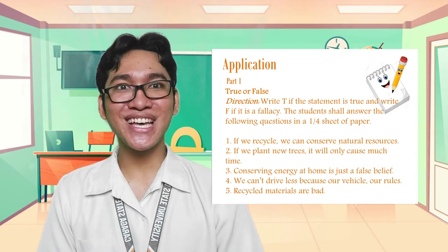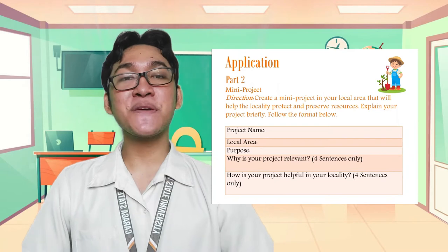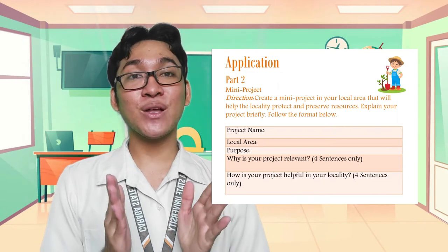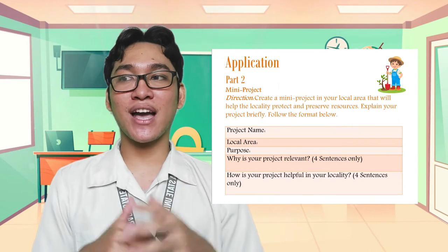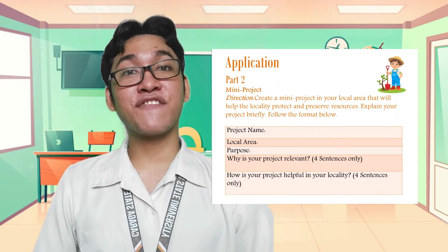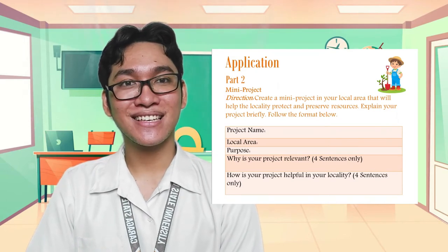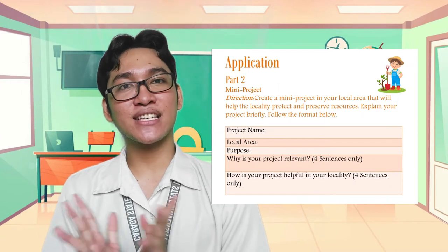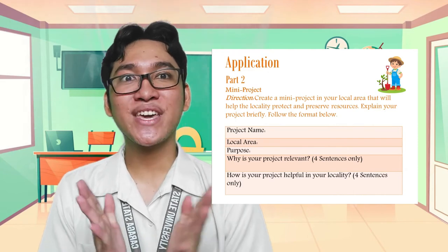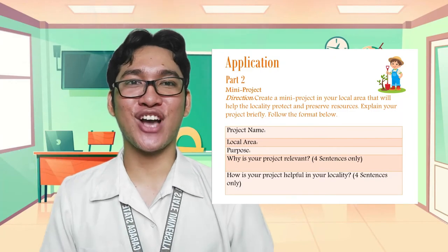All of you got a perfect score. Very good. Now, the exciting part of our application is the mini project. For the direction, create a mini project in your local area that will help your locality protect and preserve resources. Explain your project briefly. Follow the format: project name, your local area, your purpose, why is your project relevant - four sentences only, and how is your project helpful in your locality - four sentences only. May I call on Miss Lisa. Can you tell us about your mini project? My project is a visitation in Butuan City to give food to less fortunate people. Very great, Miss Lisa. I love that your mini project is very timely and relevant. All of you did a very great job. A round of applause to everyone.